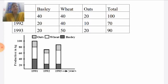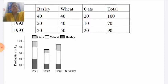First of all, we make bars of the total. In 1991, our total is 100, and we subdivide the bars into different parts. Basile's 40 kg production in 1991 is marked up to 40 kg using a dark color. After that, wheat is shown by white color for 40 kg above the basile — so 40 plus 40 equals 80 kg — and then oats production of 20 kg is shown above that.